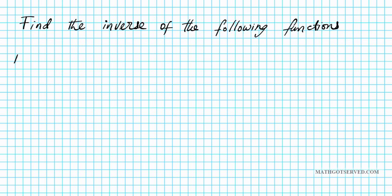For question number one, what if we have the function f of x equals negative five plus four over seven x? Now what type of function is this? This is a linear function because the degree of x is one.